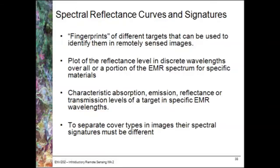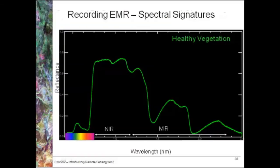To be able to separate different cover types within an image, their spectral signature must be different from each other. First of all, healthy vegetation — we're going to become more and more familiar with this as the semester goes on. The x-axis shows wavelength, and this is actually in micrometers — there is a typo here that says nanometers, but it should be micrometers along the x-axis.